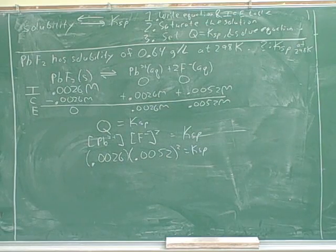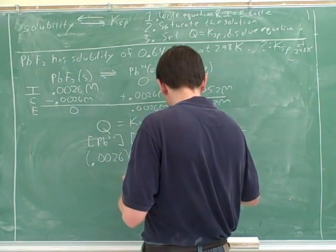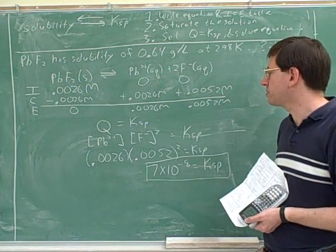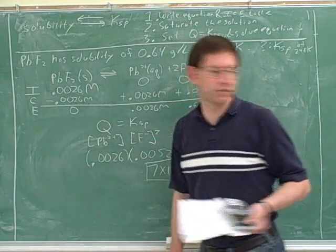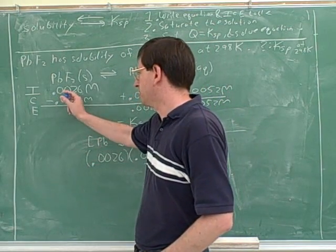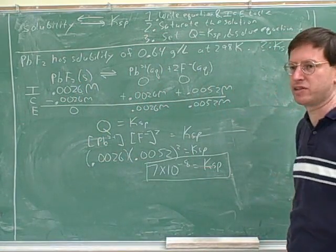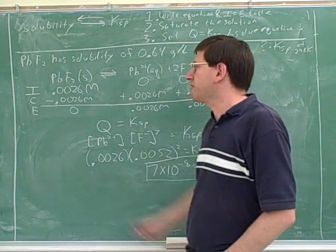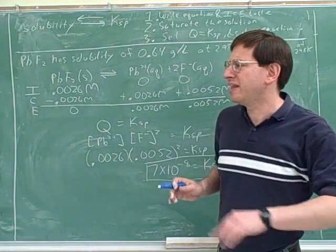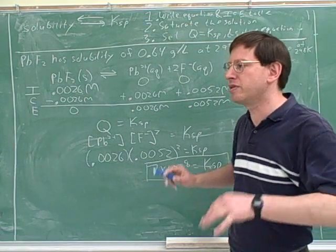The answer to the question is 7.0304 times 10 to the minus 8 equals Ksp. I'll round that off to 7 times 10 to the negative 8. That's a pretty small number, but that's okay because this is apparently a salt that's not that soluble. We were able to saturate the solution by only adding 0.0026 molar — a very small concentration. So it makes sense that the Ksp would be small. Notice that if the solubility is small, the Ksp tends to be small, and vice versa, but they're not the same thing.